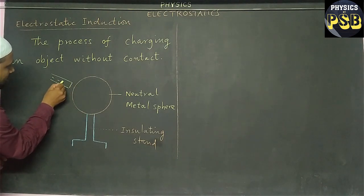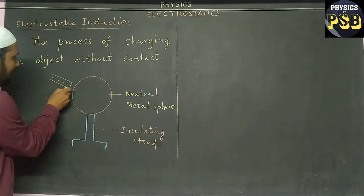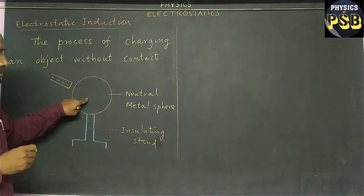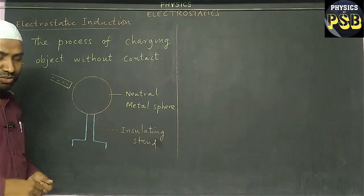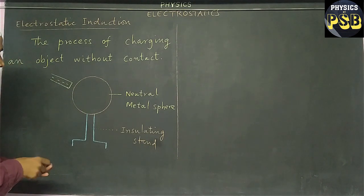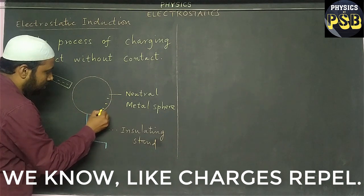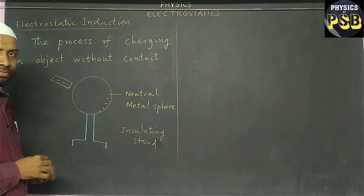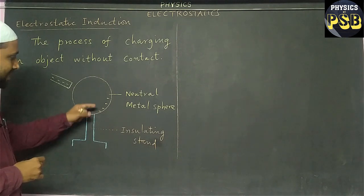When a negatively charged rod is brought near this metal sphere, electrons present in this metal sphere get repelled. They move to this part of the sphere, to the opposite part of the sphere.